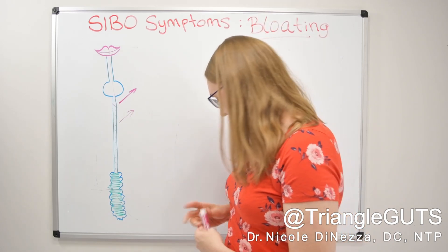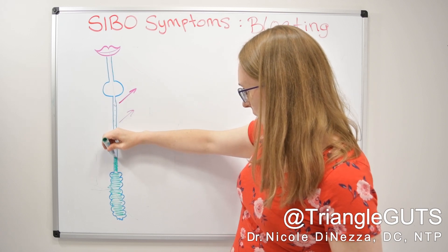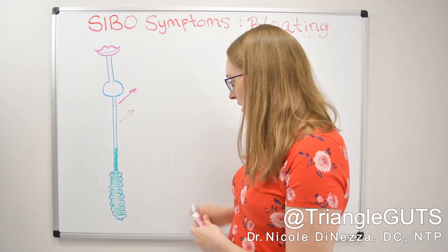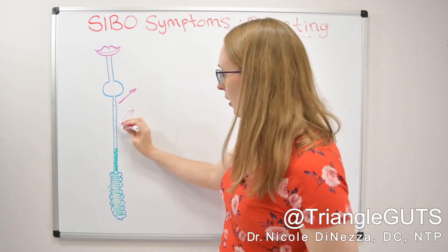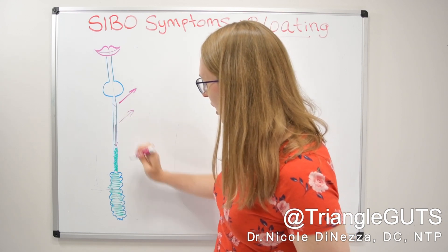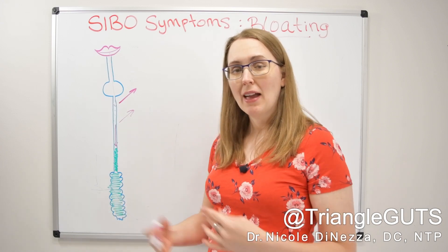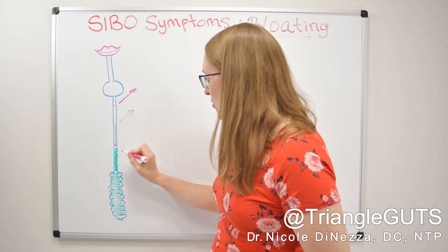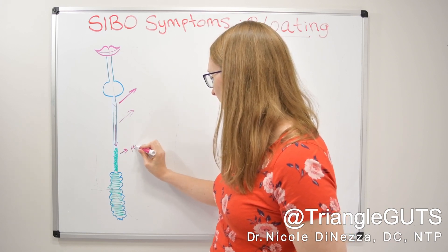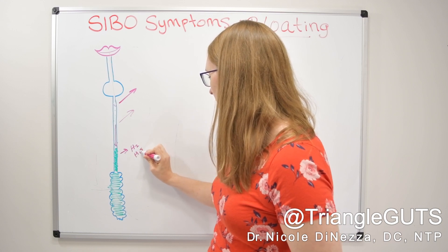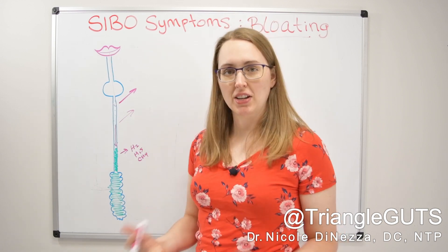Versus if we have a scenario where somebody has SIBO — where you have quite a lot of bacteria overgrown into the small bowel — now the food doesn't make it nearly as far before it hits that wall of bacteria. The bacteria are going to start fermenting that food and those fibers much, much more rapidly. And now you get gas production: things like hydrogen, hydrogen sulfide, and methane — the three known SIBO gases.